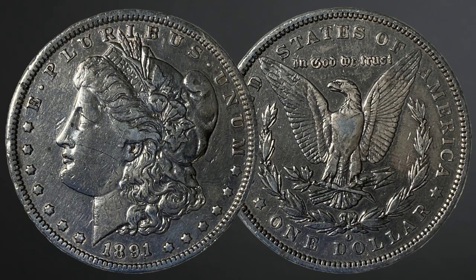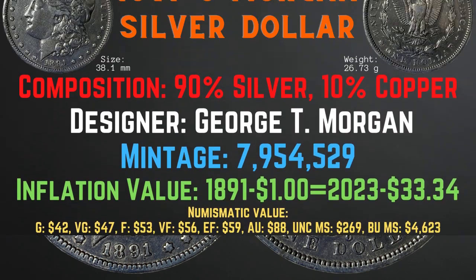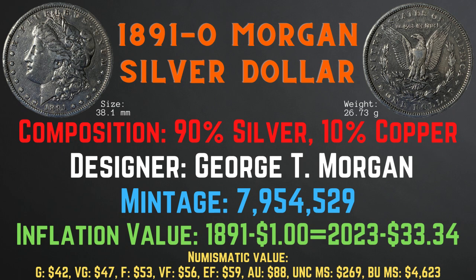Now let's take a look at the 1891-O Morgan silver dollar. It was minted in New Orleans with a size of 38.1 millimeters and a weight of 26.73 grams. It has a composition of 90% silver and 10% copper. Its designer was George T. Morgan. Its mintage is 7,954,529. Its inflationary value for the year 1891 is $33.34. The numismatic values range from $42 in good condition up to $4,623 in brilliant uncirculated mint state condition.